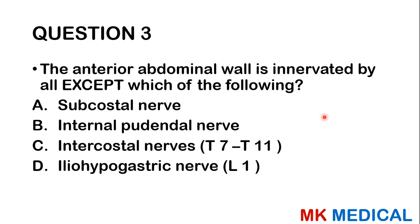Question three: The anterior abdominal wall is innervated by all except which of the following? A, subcostal nerve. B, internal pudendal nerve. C, intercostal nerves T7 to T11. D, iliohypogastric nerve, which is L1. This is an anatomy-related question where you either know it or you don't. The answer is the internal pudendal nerve, which does not supply the anterior abdominal wall.